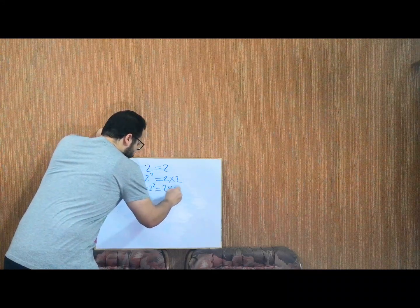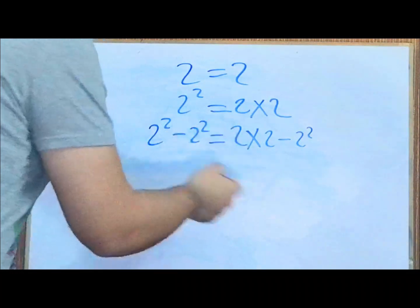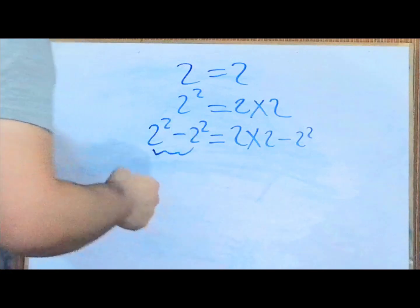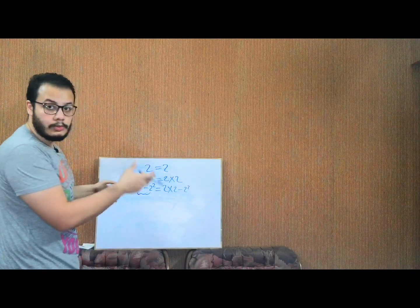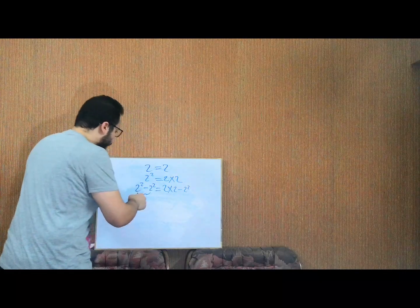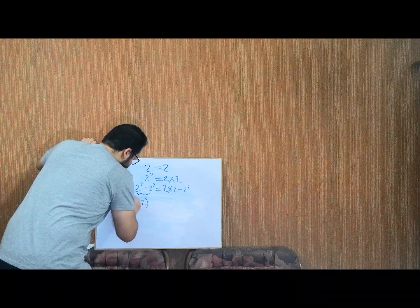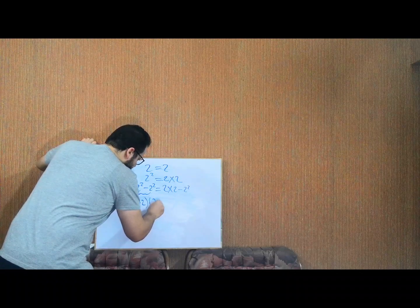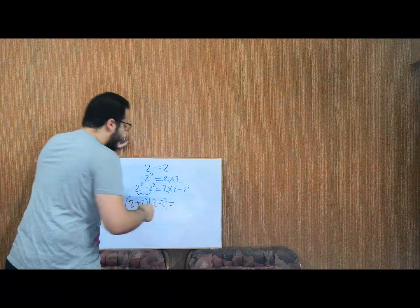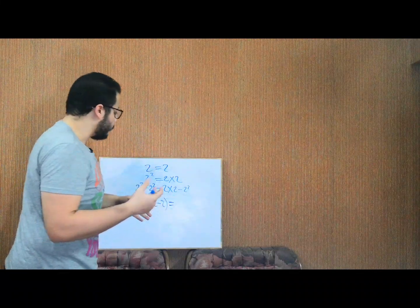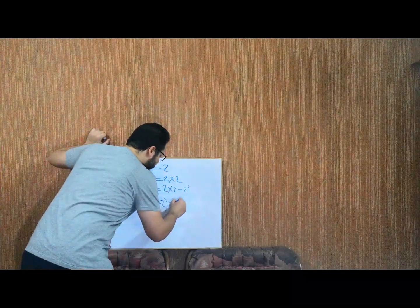It's the same thing, right? This side we can rewrite because this is the difference between two squares as (2+2)(2-2). And we can take 2 as a common factor from this side, so we write 2(2-2).